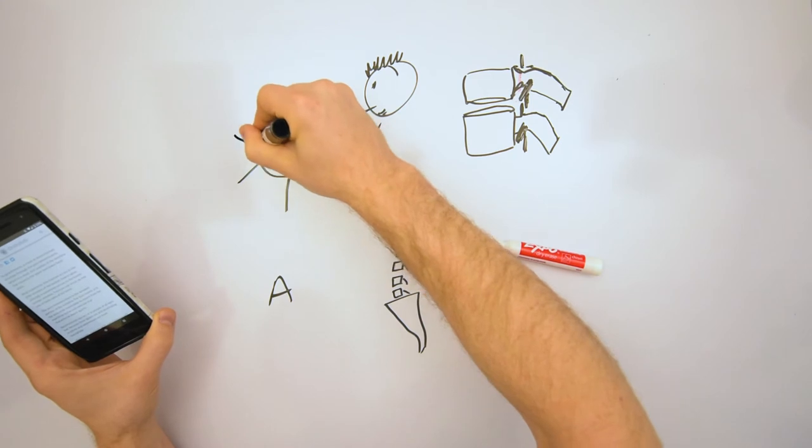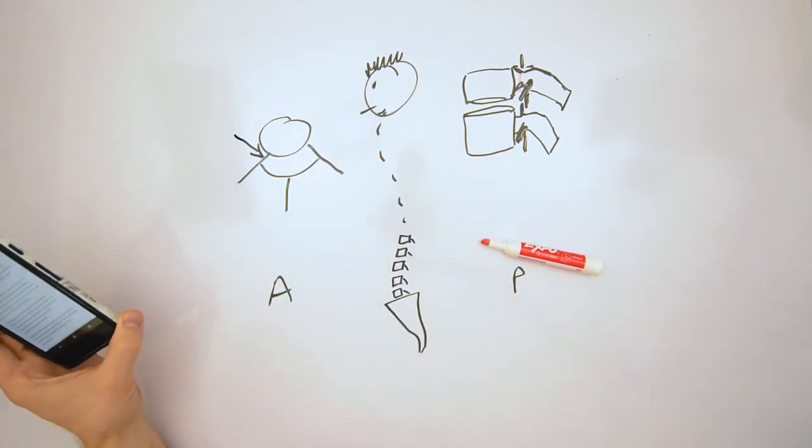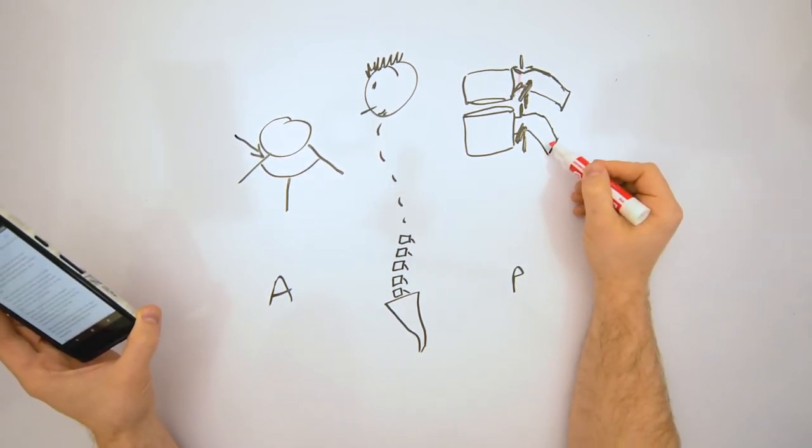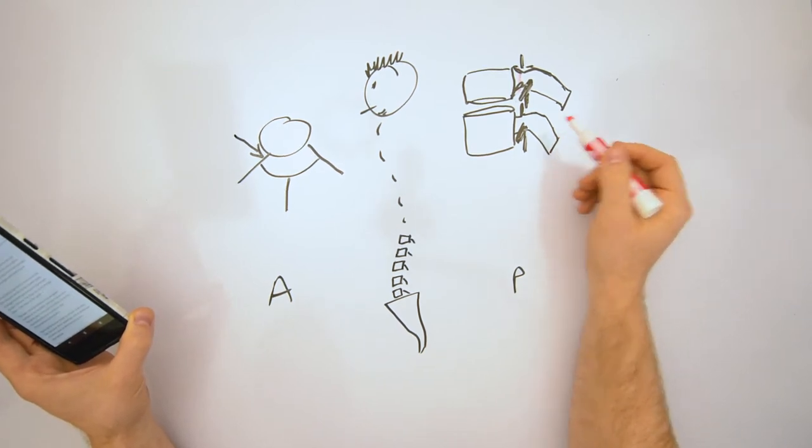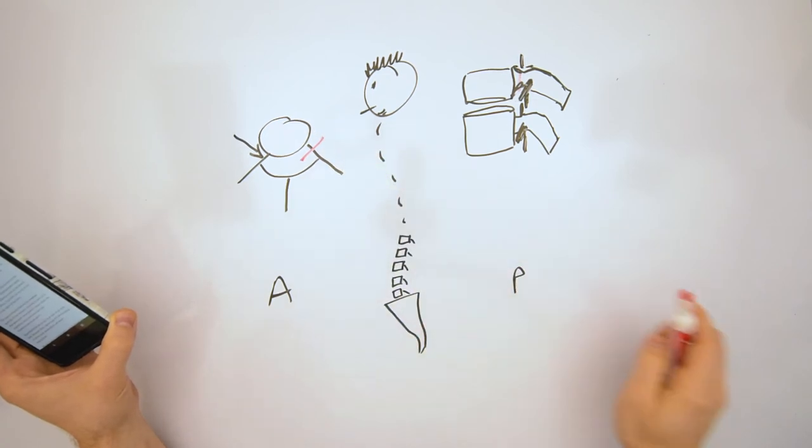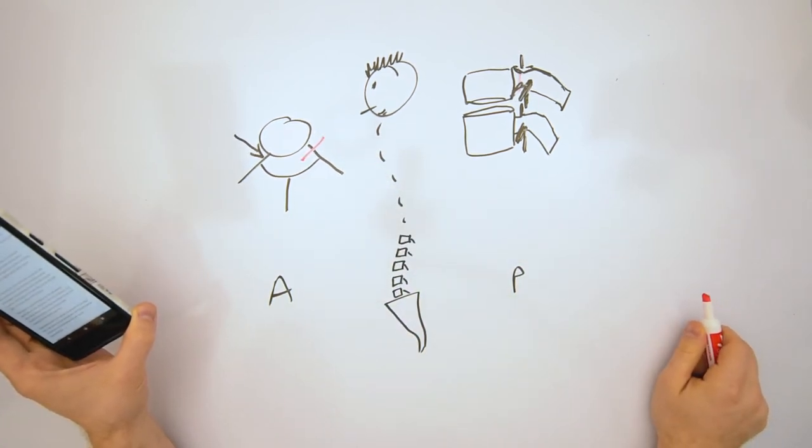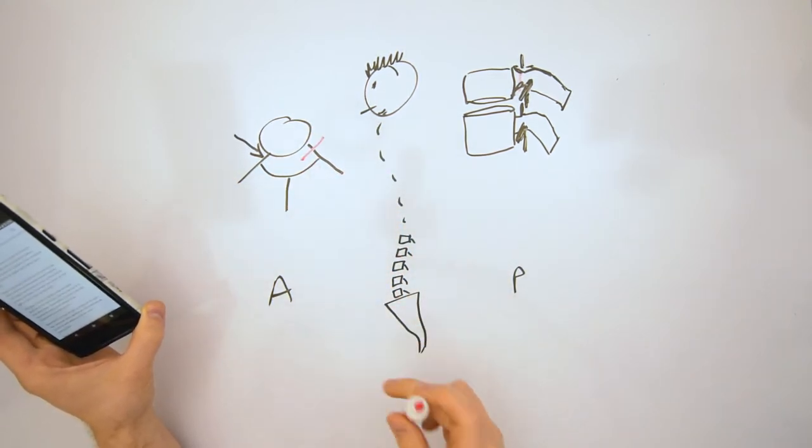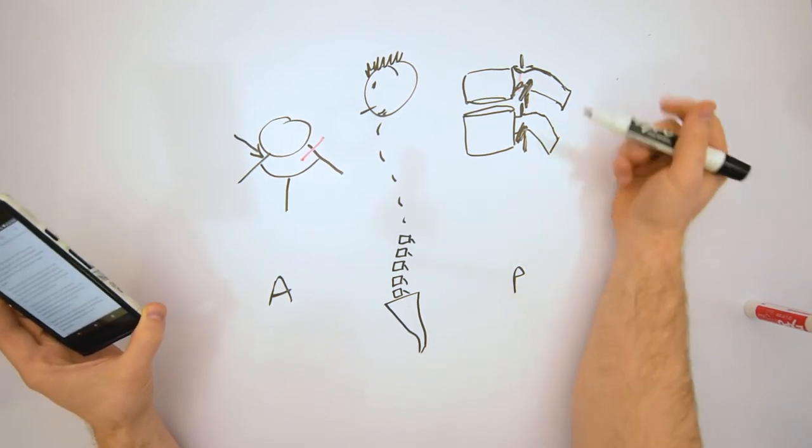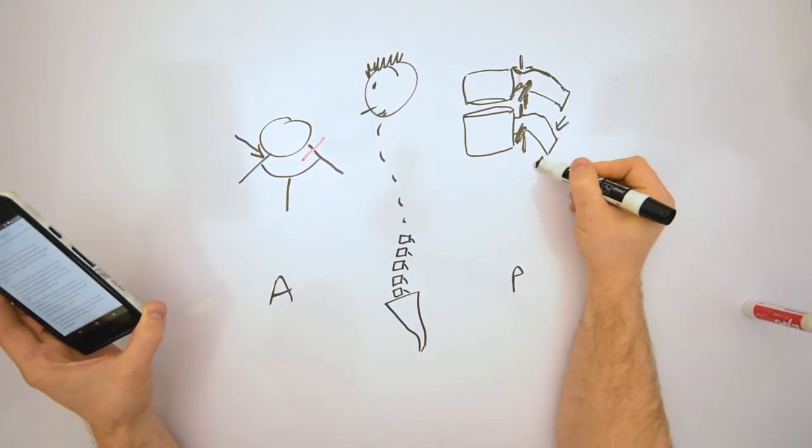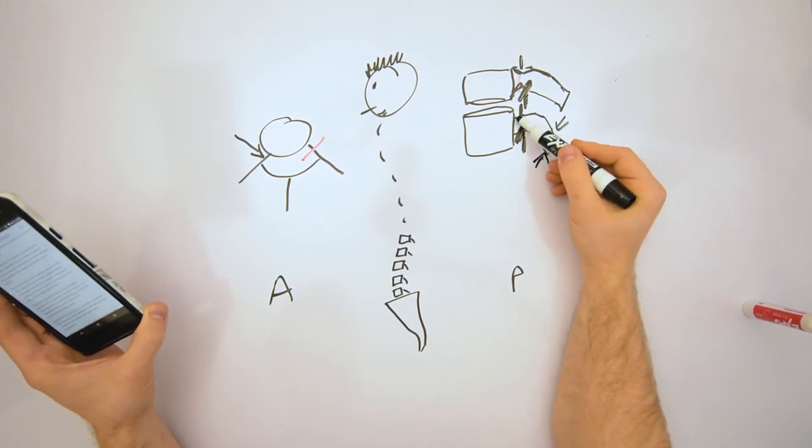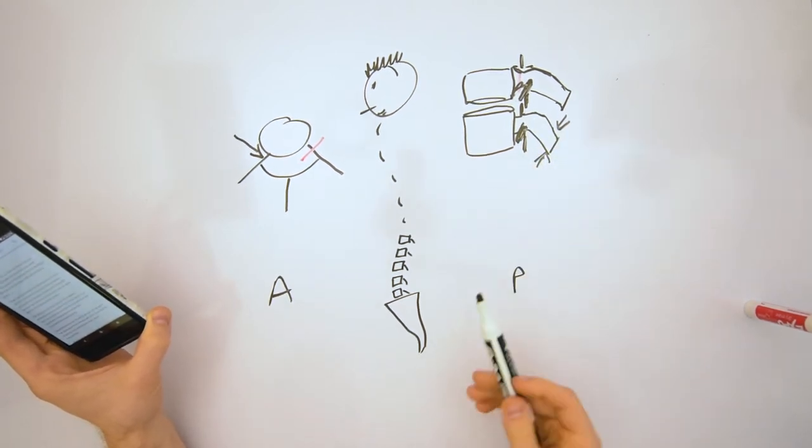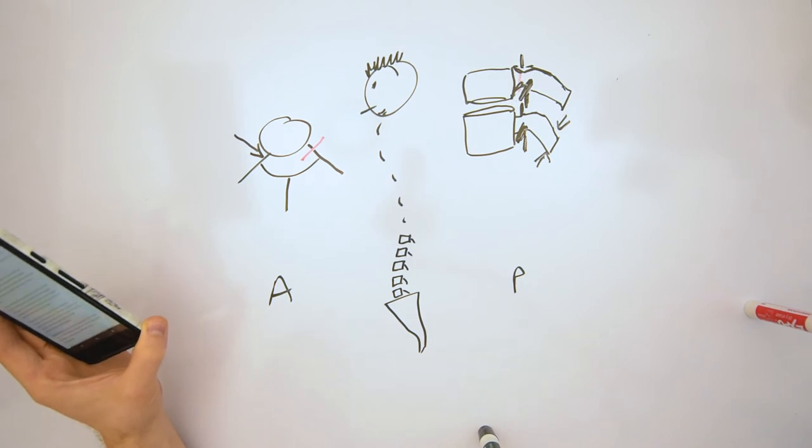This joint right here, that's where our pars interarticularis is. And that's where we have a lot of leverage. If I jack up on one of these spinous processes here, I have a lot of leverage to break the pedicle of the vertebra. So if I put stress on this area, either way, I can get this stress crack, stress fracture in this region of my vertebra. When I have a spondylolisthesis, what happens is it actually breaks off, actually totally slips out.